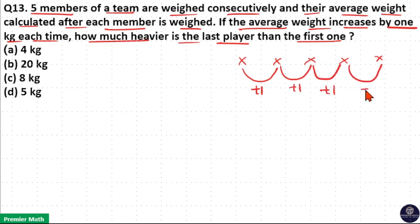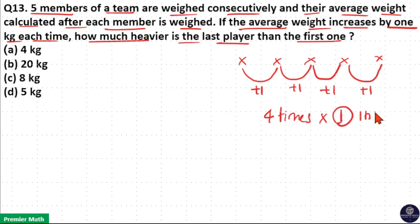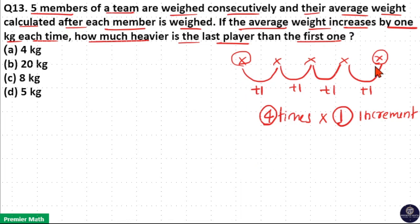When 5 players' weights are measured, there are a total of 4 times the average increases by 1 kilogram. So, 4 times the average increases by 1 kilogram — 1 kilogram is the increment here. We have to calculate the weight difference between 2 players: the last player and the first player. Between the last and first player, there are 4 times average increases, and average increases by 1 kilogram — that is, unit increment.